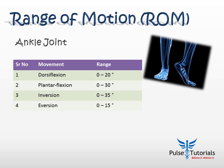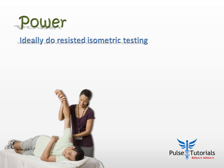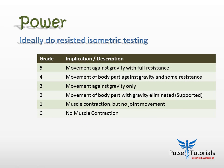Once done with range of motion, we move on to muscle power assessment. We perform resisted isometric testing — placing the joint in a particular position, applying force, and asking the patient to resist. We grade it into six grades: Grade 0 is no muscle contraction. Grade 1 is slight contraction but not adequate for any joint movement. Grade 2 is movement with gravity eliminated. Grade 3 is movement against gravity only. Grade 4 is movement against gravity with some moderate resistance. Grade 5 is movement against gravity with full resistance.